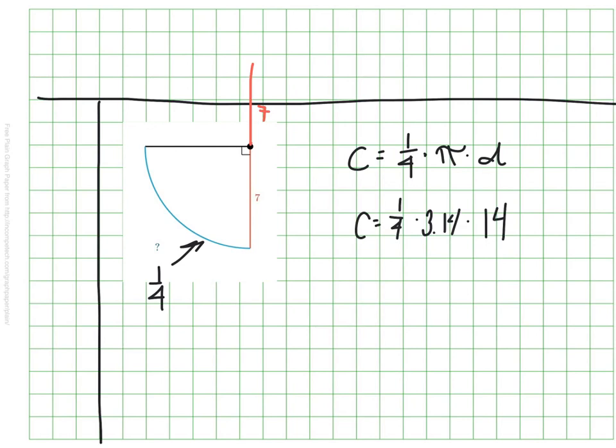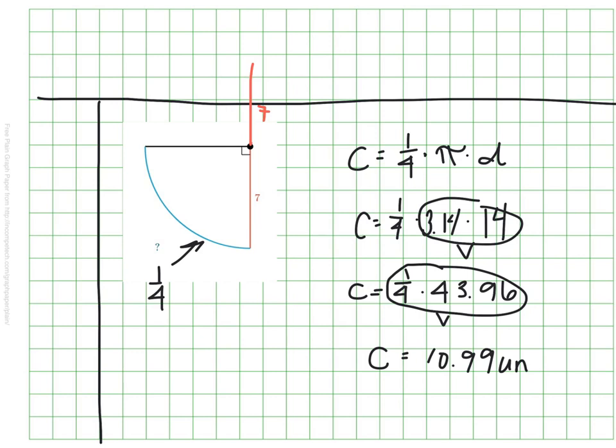So I'm going to go ahead and do all my calculations. And when I do that, I see that just that little piece of the circle, that little quarter arc, would be about 11 units—10.99 units for my calculations.